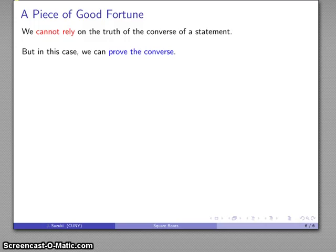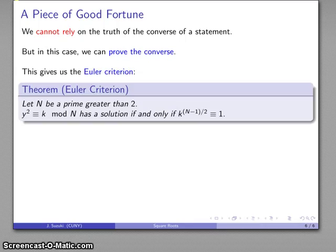However, we are in luck this case because we can actually prove the converse. This gives us what's known as the Euler criterion. Let n be a prime number greater than 2. y squared congruent to k mod n has a solution if and only if k to the power of n minus 1 over 2 is congruent to 1.